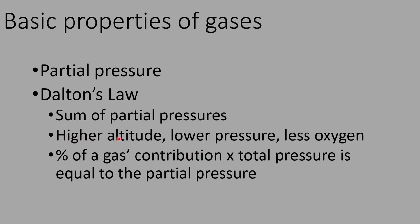At higher altitude — if you were to climb a mountain — there's less atmosphere pressing down against you, so at higher altitude there is lower atmospheric pressure. If there's lower total pressure, then each one of those contributing gases will have a lower pressure. That's why there is less oxygen as you climb a mountain. People climbing Mount Everest have oxygen masks on because they're so high up in the atmosphere there's very little partial pressure of oxygen.